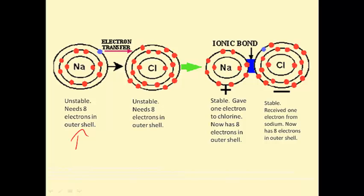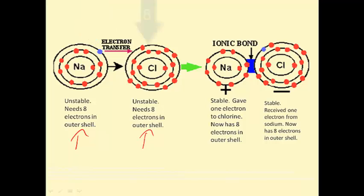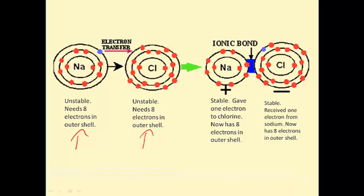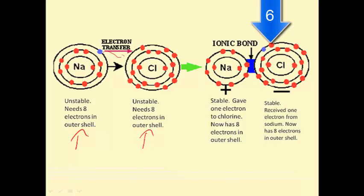Sodium is unstable — it needs 8 electrons in its outer shell but only has 1. Chlorine is also unstable; it needs 8 electrons in its outer shell and has 7 out of 8. Sodium is nowhere near having 8 electrons in its outer shell, and it's unlikely to gain 7 more electrons. So the easiest thing for it to do is lose an electron from its outer shell, making its outer shell the second shell, which is already filled with 8 electrons. If it loses its electron to chlorine, chlorine will also have a stable octet because it will gain 1 more electron, bringing the number of electrons in its outer shell to 8.